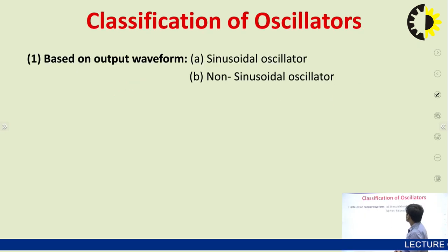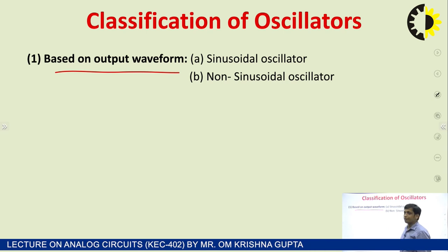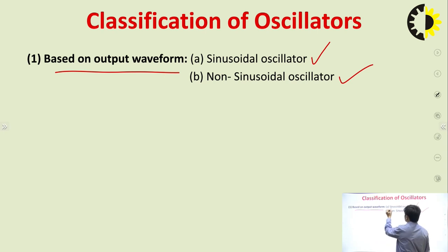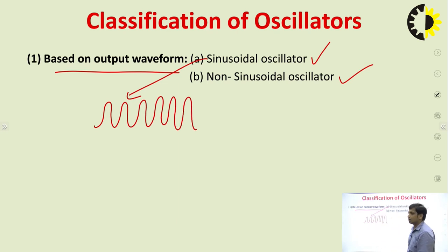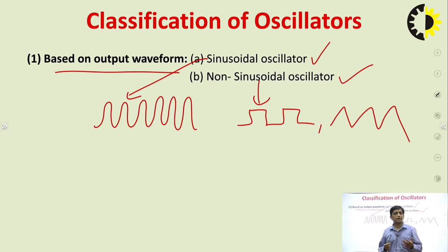Coming to the classification of oscillators. Oscillators are classified on the basis of different parameters. The first basis is based on output waveform. Based on output waveform, there are two types: sinusoidal oscillators, which generate a sine wave, and non-sinusoidal oscillators, which generate a square wave or triangular wave. Square wave generators and triangular wave generators are non-sinusoidal oscillators.